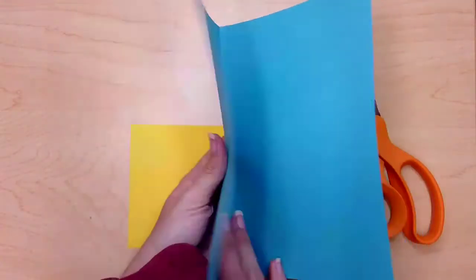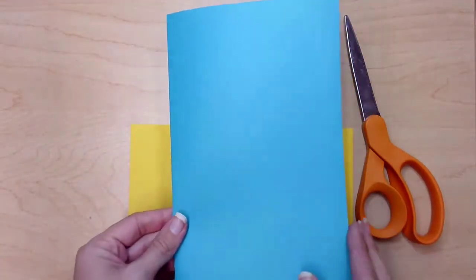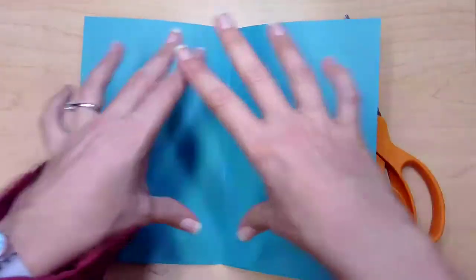So what I want you to do is take your piece of paper and fold it in half hamburger style. Take your paper that's landscape or horizontal.